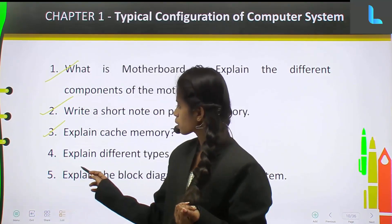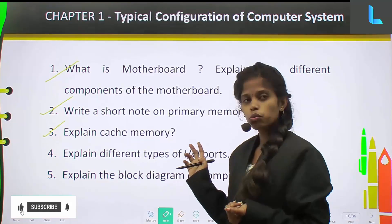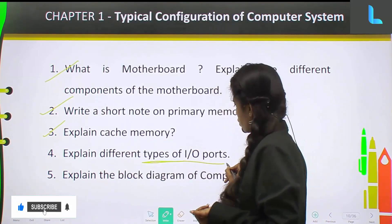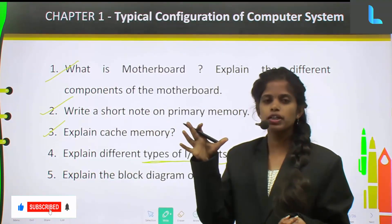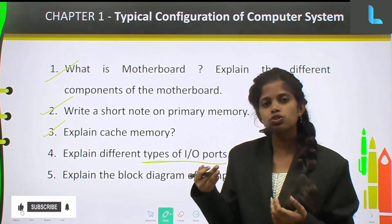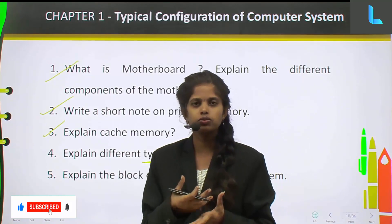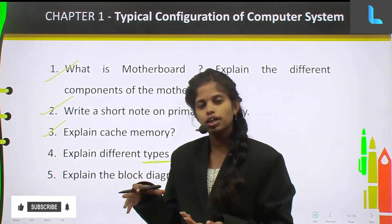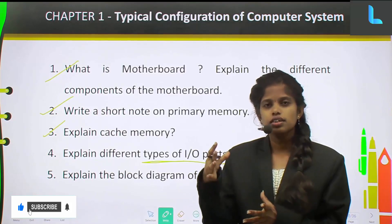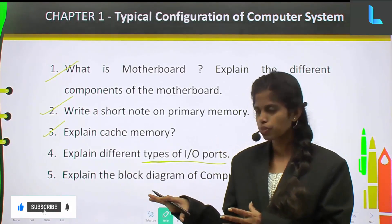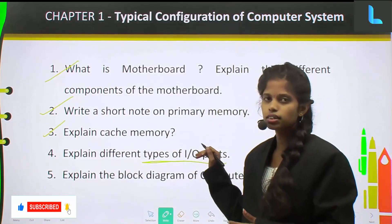Now we will see the fourth question, which is: explain different types of IO ports. They are talking about types of IO ports. In the components we saw, you had one component which is IO ports and interface. The use of IO ports and interface is to connect any external input-output device to the computer, which is internally connecting to the motherboard. Whatever ports you use for that are called IO ports, and under that you have different types of ports available.